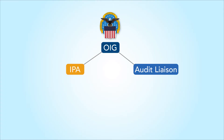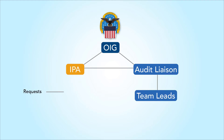The audit liaisons are the link between the IPA and the rest of DLA. They will receive requests from the IPA, coordinate with team leads, and field personnel to collect and submit requested documentation. They will also coordinate questions received from the team lead to the IPA for response.